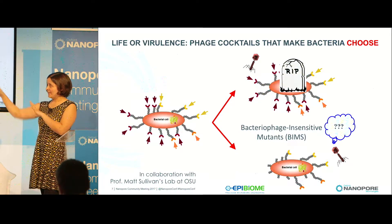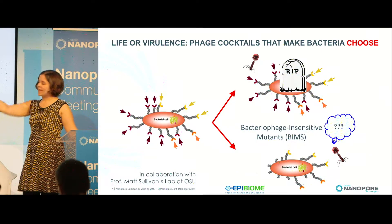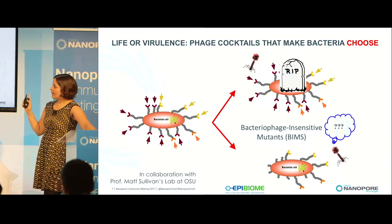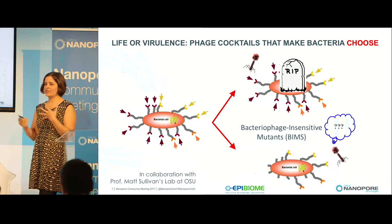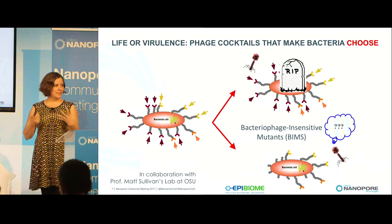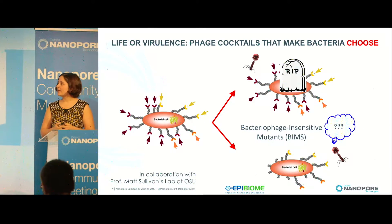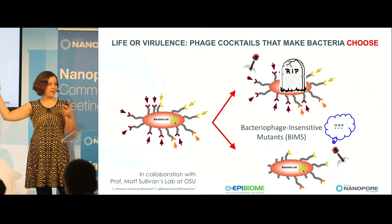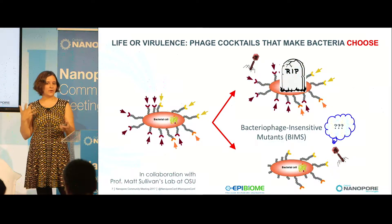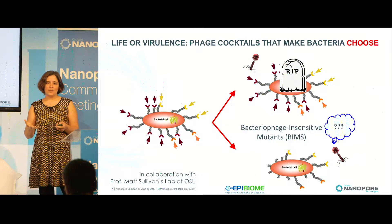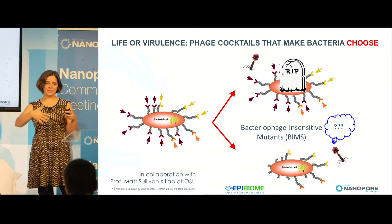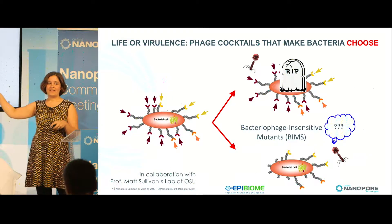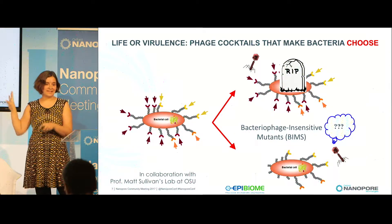We needed to sequence both the phage-susceptible and the phage-resistant mutants to understand this interaction. The hope is that as we do this sequencing and understand these interactions, we might be able to pick phages that preferentially cause the bacteria to become less virulent when they become phage-resistant. So if you see that correlation, you can push your cocktails to be much better — even if resistance is gained, it may be a less virulent form of the bacteria, so the patient may be less sick.